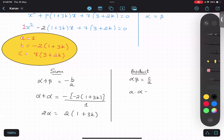That will be next step. I'll just substitute C. C is what? 7 bracket 3 plus 2k upon 1. So alpha square becomes 7 bracket 3 plus 2k.